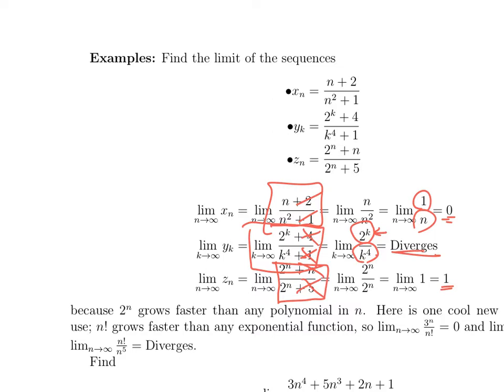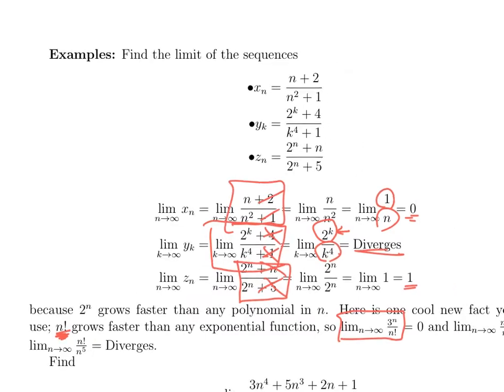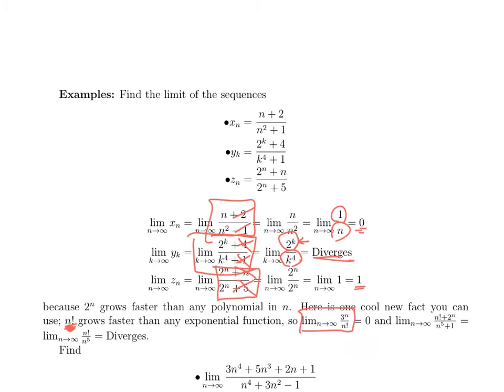We've learned one new function since we did this with limits of functions, which is one new sequence: n factorial. So here's the new cool fact—n factorial is Superman. It grows faster than any exponential function. So if you see an expression like the limit as n goes to infinity of 3^n/n!, you say, oh, n factorial grows faster, so this goes to zero.